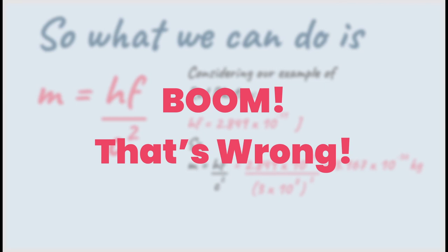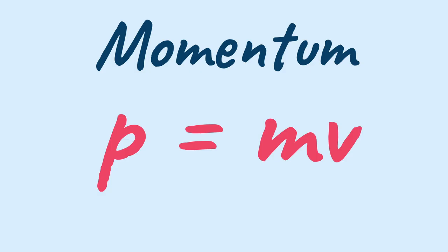So we cannot calculate its mass. But now you must be thinking if photons do not have mass, how do we get their momentum? We know that they have momentum. But how do we get there without mass?